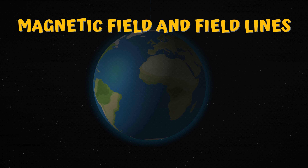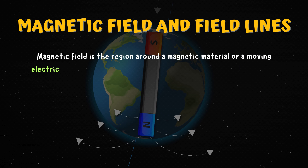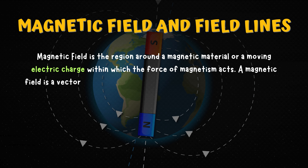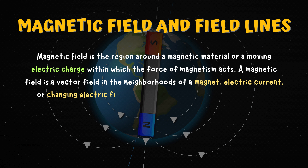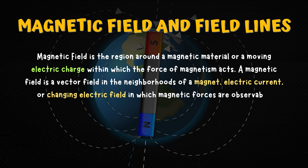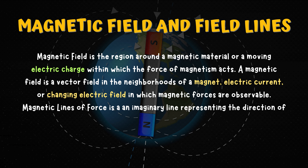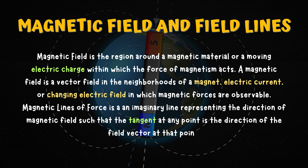Magnetic Field and Field Lines. Magnetic field is the region around a magnetic material or a moving electric charge within which the force of magnetism acts. A magnetic field is a vector field in the neighbourhood of a magnet, electric current, or changing electric field in which magnetic forces are observable. Magnetic lines of force is an imaginary line representing the direction of magnetic field such that the tangent at any point is the direction of the field vector at that point.